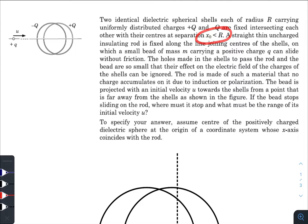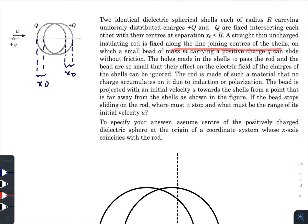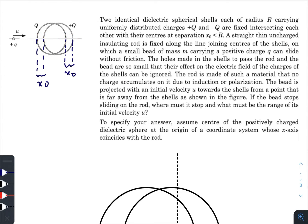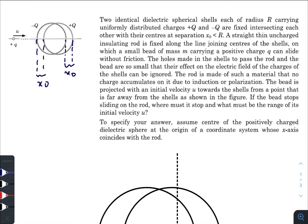The center separation x naught is less than capital R. A straight thin uncharged insulating rod is fixed along the line joining the centers of the shells, on which a small bead of mass m and positive charge Q can slide without friction. There are four holes made in the shells to pass through the rod, and the effect of the holes on the electric field is negligible. The rod is insulating, so no charge accumulates on it.